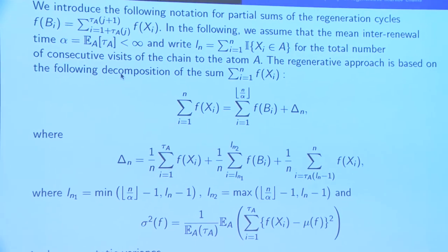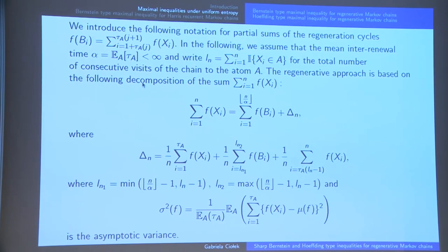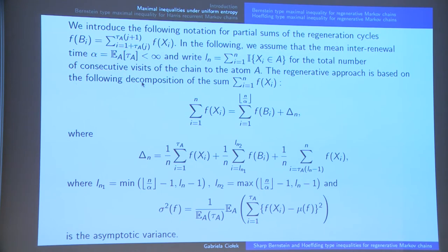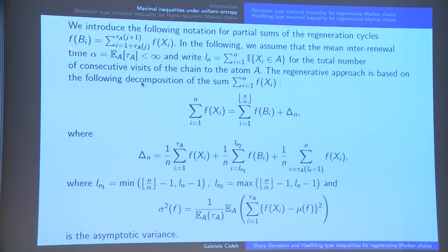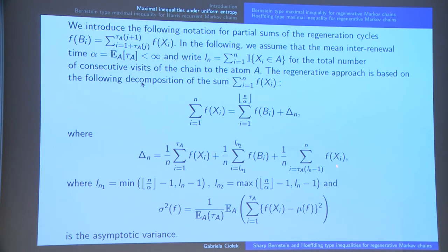Now I introduce some additional notation. By F_B^(i) I denote the sum of observations f(X_i) between two consecutive visits of the chain to atomic set A. I assume the mean inter-renewal time alpha is finite. By l_n I denote the total number of consecutive visits to atomic set A. I decompose the sum of observations f(X_i) into two components: a sum of blocks up to the deterministic number n over alpha, plus a remainder term delta_n. The first part of delta_n is the first non-regenerative block, then there is a remainder term between n/alpha and l_n random blocks, and finally the last non-regenerative block. By sigma^2(f) I denote the asymptotic variance.